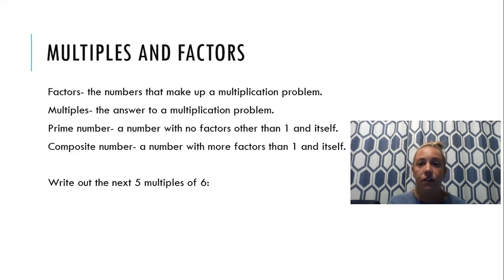If you were going to write out multiples, remember that those are answers to multiplication problems. When it says write out the next 5 multiples of 6, you need to think what 6 times the number is going to equal. For example, 6 times 2 equals 12. That is the first multiple we would write down. 6 times 3 equals 18. That's my second multiple.